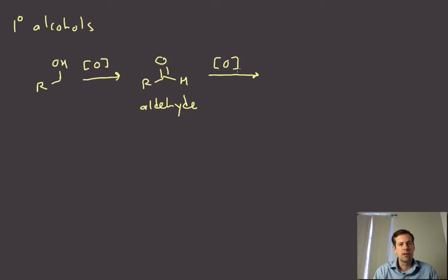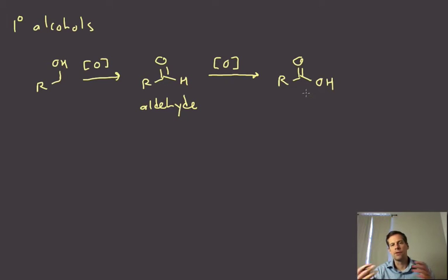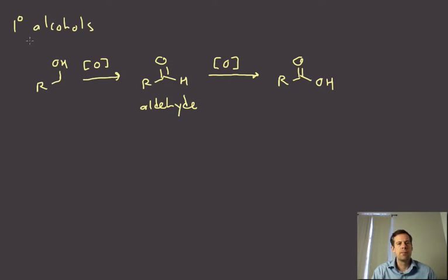With primary alcohols, it is actually possible to oxidize a second time. We can oxidize the aldehyde and go up to a higher oxidation state, such as a carboxylic acid. Primary alcohols can be oxidized twice because they have two different hydrogens in that position on the carbon.